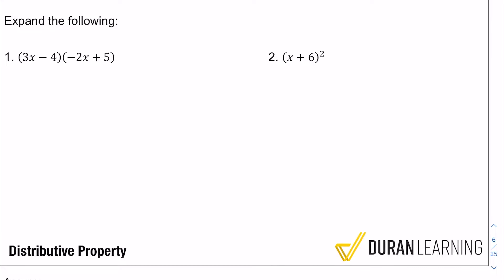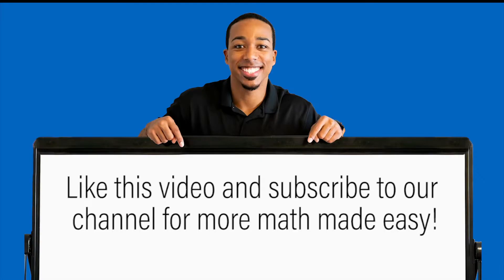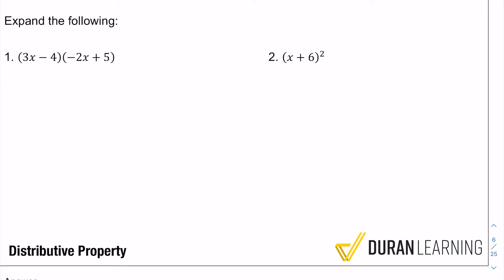Let's go ahead and kick it off here. Expand the following. So again, distributive property is what we're working on, and here's the basic rule of thumb. This is really all you want to do with distributive property and binomials: just make sure that every term from one binomial multiplies with every term from the other.